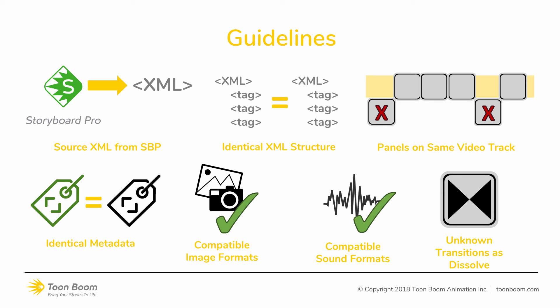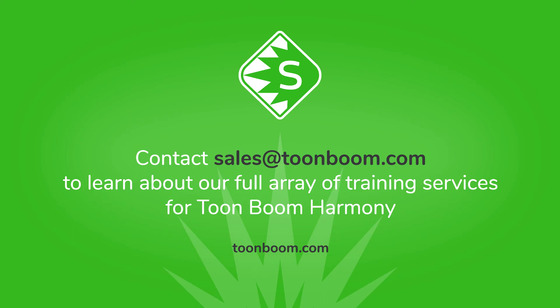And finally, unknown transitions — for example, if you're using transitions in Final Cut Pro that do not exist in Storyboard Pro — they will be conformed back as a dissolve transition. So these are the main guidelines for using the XML conformation: to create your storyboard in Storyboard Pro, then create your animatic in either Final Cut Pro 7 or Premiere, and then push back these changes into Storyboard Pro. Thank you.